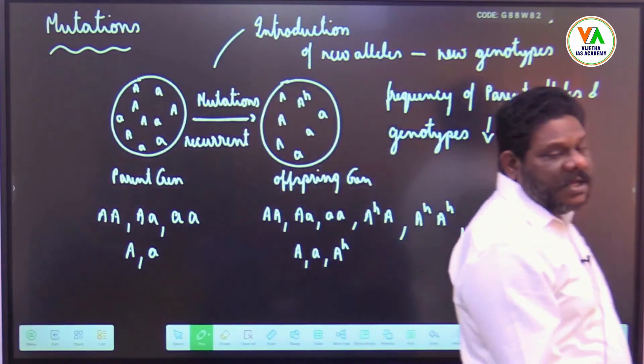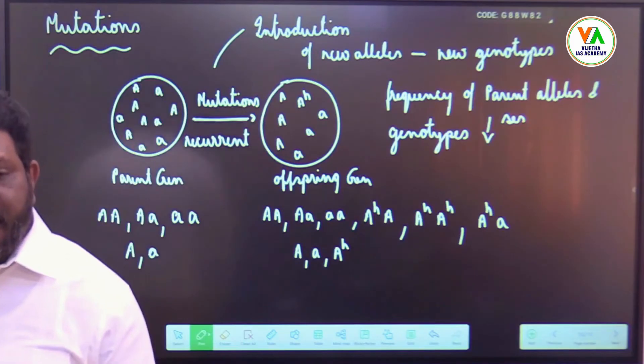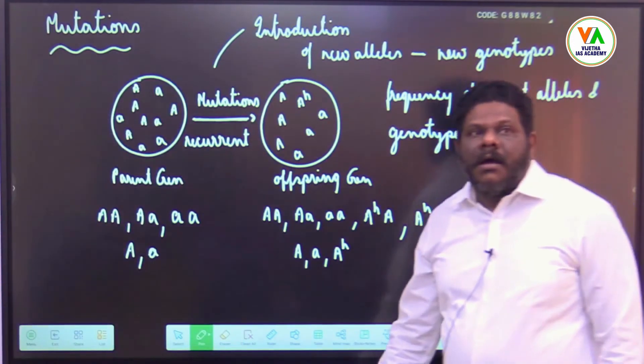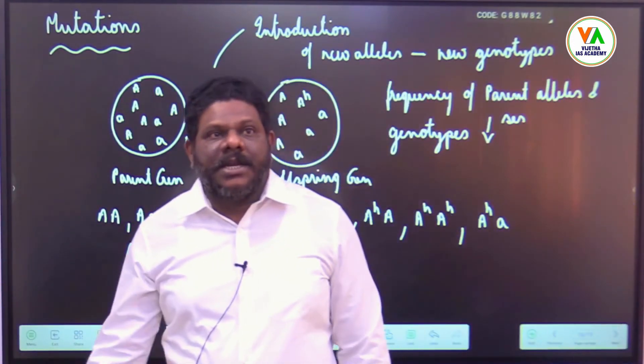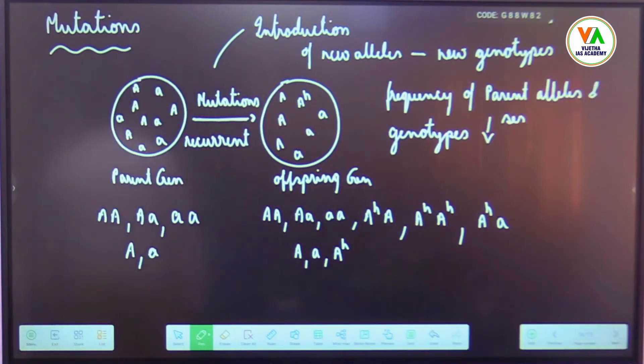Non-recurring mutations result in new variations or introduction of new alleles and genotypes. As a result the frequency of alleles and genotypes from one generation to another generation will not remain constant, distorting the law of equilibrium. Sorry, sorry, recurrent only, recurrent and not non-recurring, recurrent mutations only. Earlier I think you have written non-recurring, please only recurrent only, strike off non, okay?